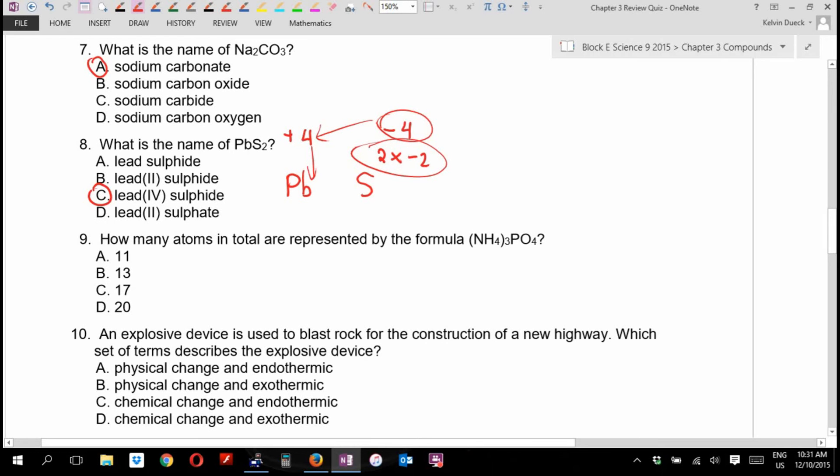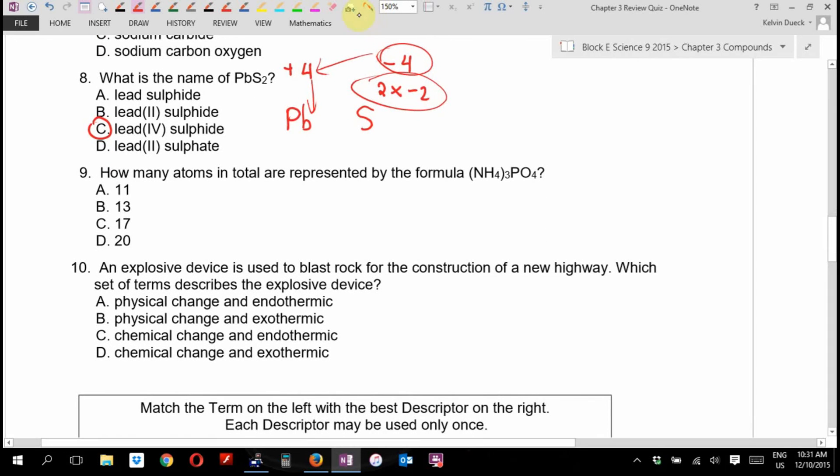How many atoms? Let's see, NH4, well there's five right there times the three, that makes fifteen, plus one phosphorus, plus four oxygens. Twenty.